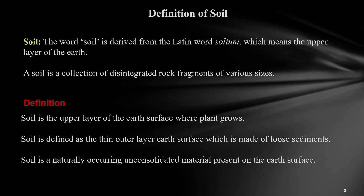Going to the definition of soil, the word 'soil' has been derived from the Latin word 'solium' which means the upper layer of the earth surface. Soil is a collection of disintegrated rock fragments of various sizes. Since soil has been used by many engineers like agriculture engineers, geotechnical engineers, as well as geologists, the definition of soil differs from person to person.